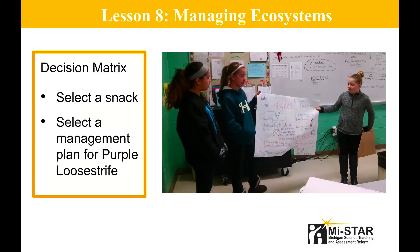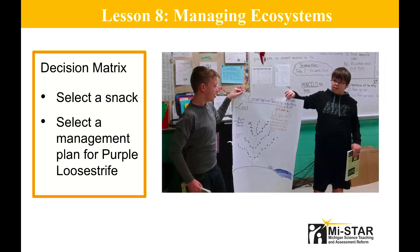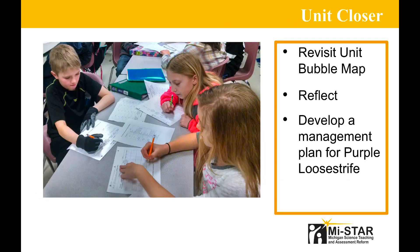For Lesson 8, students practice using a decision matrix to select a snack, then transfer this knowledge to compare management strategies for combating purple loosestrife. Students take on a community role, such as township trustee or preserve manager. The role that students play in the community determines which criteria are most important to them as they complete the decision matrix to decide which solution is best. They also use a decision matrix at the end of the lesson in their unit challenge teams to compare management strategies for the invasive species in their ecosystem.